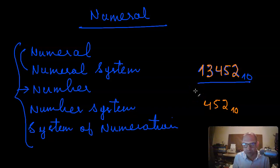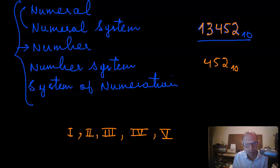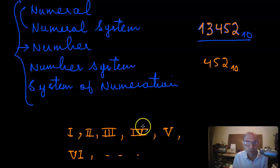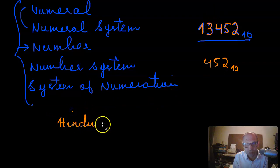There are different types of numerals. For example, the Roman numerals: you would write one as I, two as II, three as III, four as IV, five as V, six as VI, and so on. These are called Roman numerals. Then there are the numerals that we normally use in our numbers, which are called Hindu-Arabic numerals.